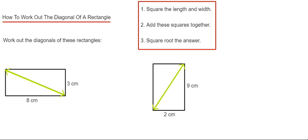You then add the squares together and then square root to get the final answer. This is basically just doing Pythagoras. Let's have a look at our first one. Our first rectangle has a base length of eight and a width of three.